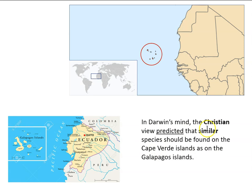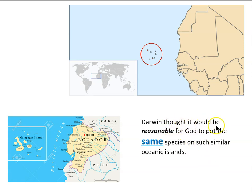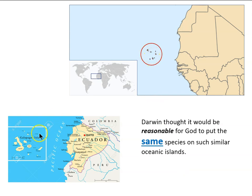In Darwin's mind, the Christian view predicted that similar species should be found on the Cape Verde Islands as on the Galapagos Islands, since God designed species with adaptations to live in certain environments — and if the Galapagos and Cape Verde Islands are very similar environments, God might simply put the same set of species on those islands. Christians could counter that God is not bound by that, but Darwin claimed this would still be a reasonable prediction of the special creation view: we should find the same species on these similar oceanic islands.